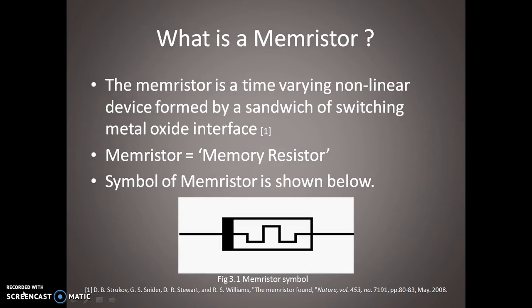The first thing is, what is a memristor? Well, the memristor is a time-varying non-linear device formed by a sandwich of switching metal oxide interface. It is a combination of two words, namely memory resistor, since here resistor saves the data. The symbol shown is that of the memristor.